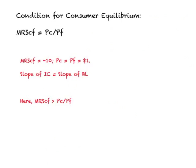The condition for equilibrium is that the slope of the community indifference curve must equal the slope of the budget line — that is, MRSCF must equal PC divided by PF. When this condition is attained, the society is at its best point.